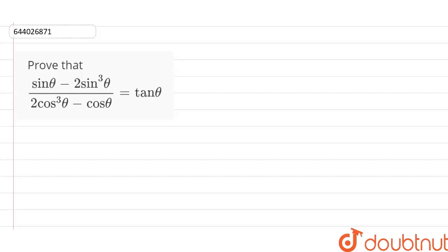Hello students, prove that sin theta minus 2 sin cubed theta divided by 2 cos cubed theta minus cos theta equals tan theta.